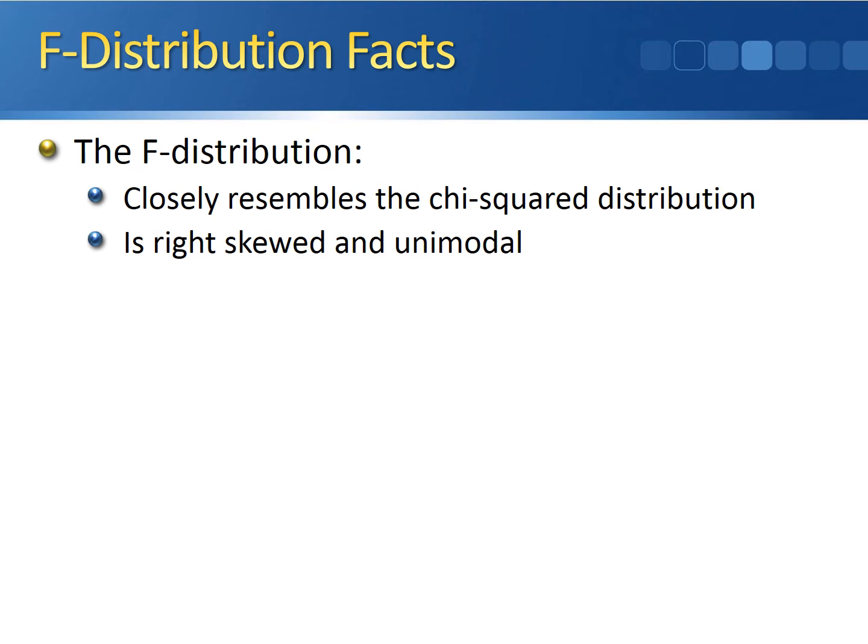It's right-skewed and unimodal. There are two parameters for the degrees of freedom for the F-distribution.